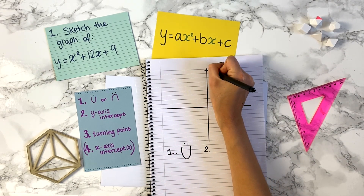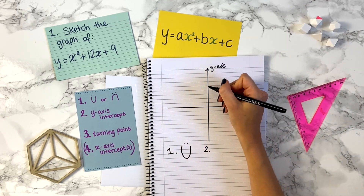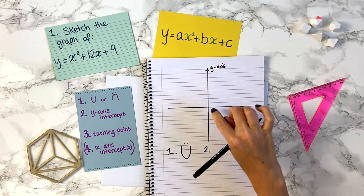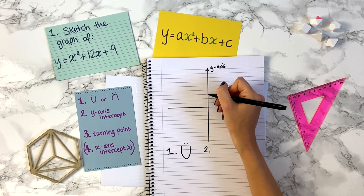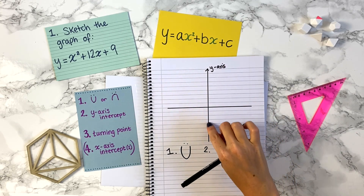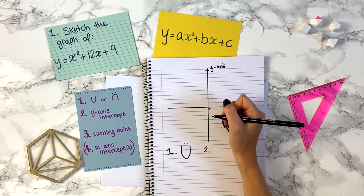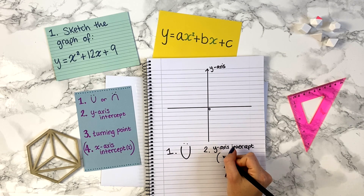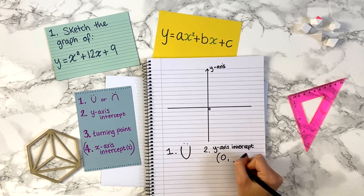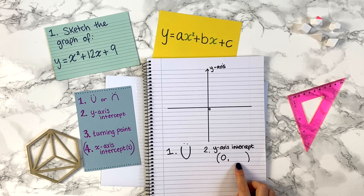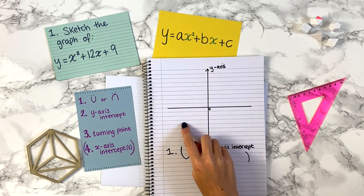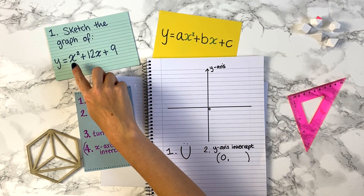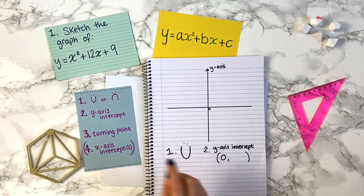The second piece of information is where the graph crosses the y-axis. We want the coordinates of where this graph crosses the y-axis. Everywhere on the y-axis the x coordinate is zero, so we know the x coordinate of that point is zero. We want to find the y coordinate, and we can do that by substituting x equals zero into the equation.